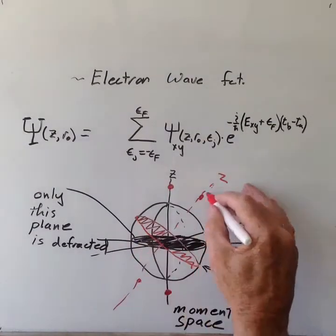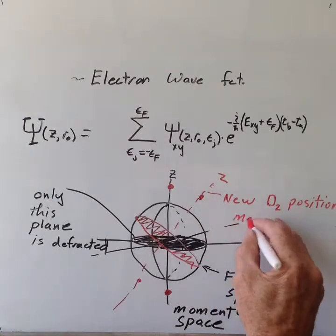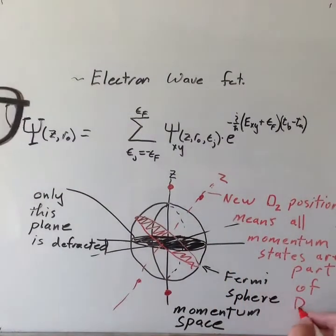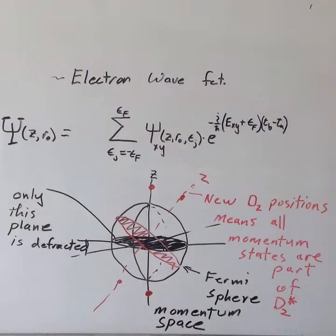this disk of states will, of course, also move. Since the deuterons have a spherically symmetric wave function, all of the electrons in the conduction band are necessary to produce this deuteron state.